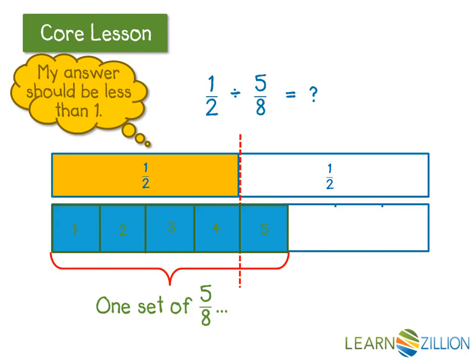If I break this whole section into equal pieces, I can see that 4 out of those 5 pieces fits into 1 half. 4 out of 5 can be shown as a fraction, 4 fifths. So I could say that 4 fifths of 5 eighths equals 1 half. This answer makes sense because it's less than 1.